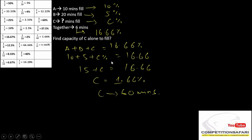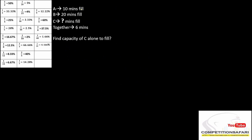So the moment I see 1.66%, I can know that this value corresponds to 1/60, which means C alone can fill the tank in 60 minutes. This was again a very easy question. If you are thorough with the ratios and their values, I assure you won't even have to use your pen. You see 10 minutes — 10%, and 20 minutes — 5%, which means 15%. C is not given, 6 minutes is 16.66%. So C equals 16.66 minus 15 = 1.66%. In two lines, you have your solution.